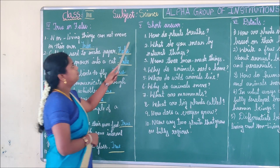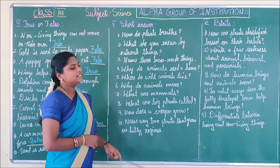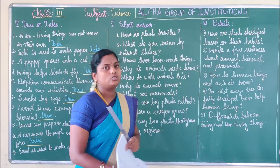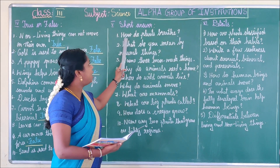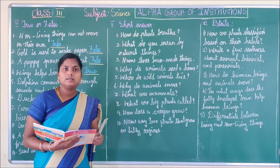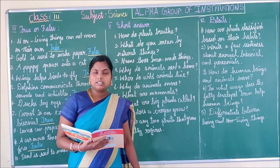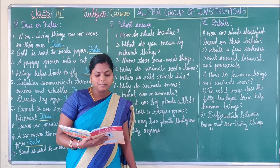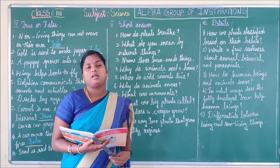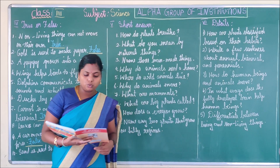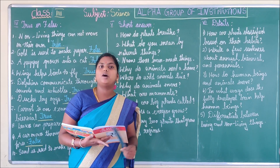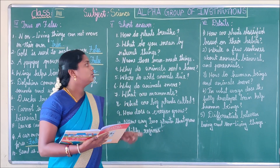Part 5 — Short Answers. First question: How do plants breathe? Plants breathe through tiny pores called stomata found in the leaves.